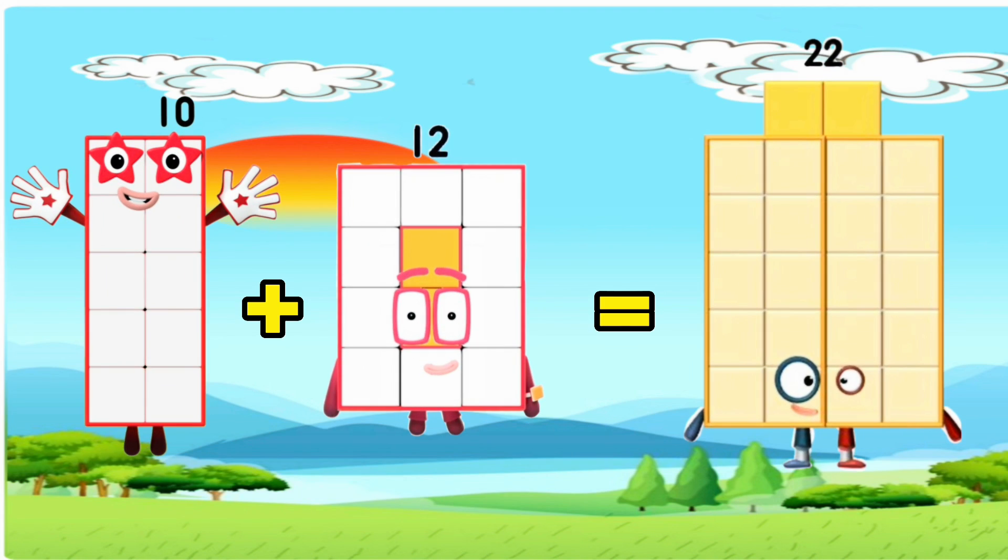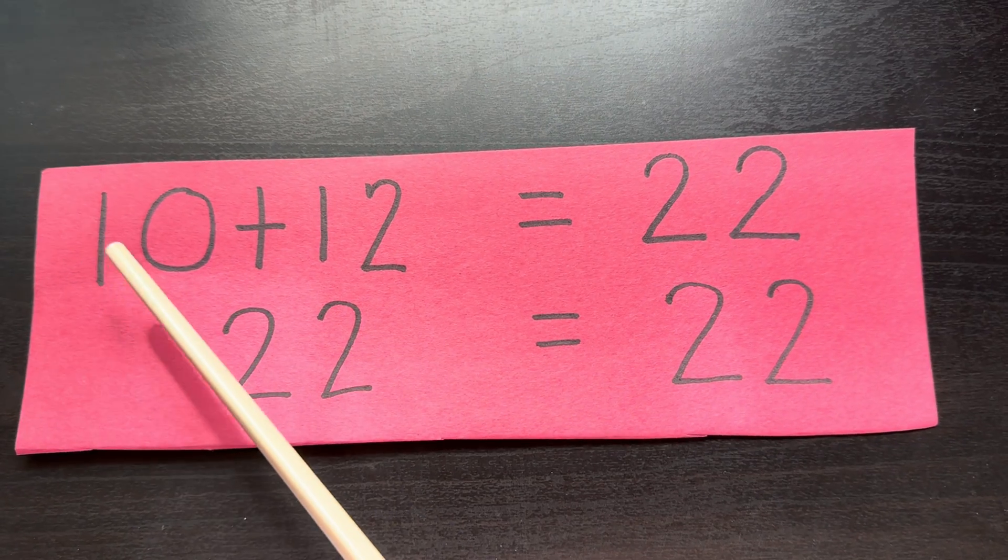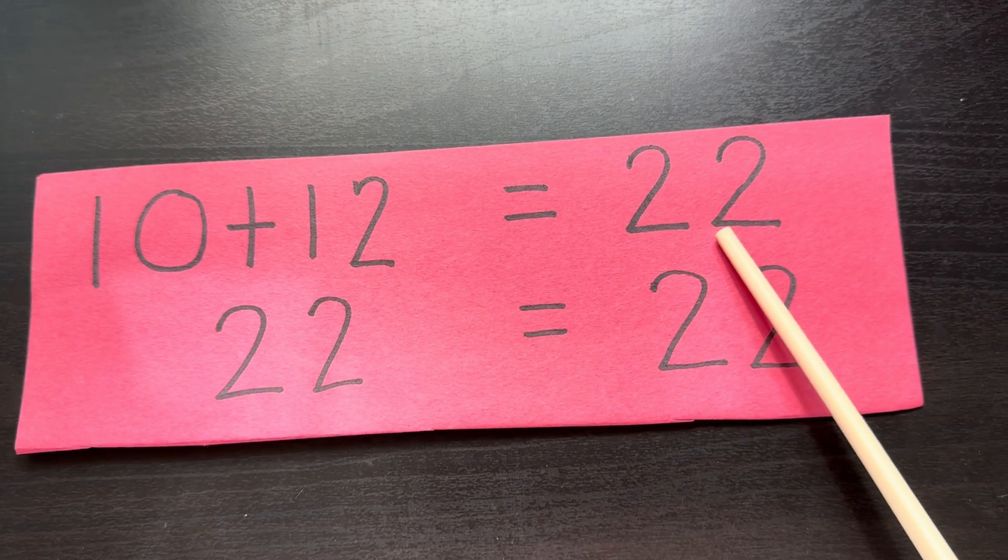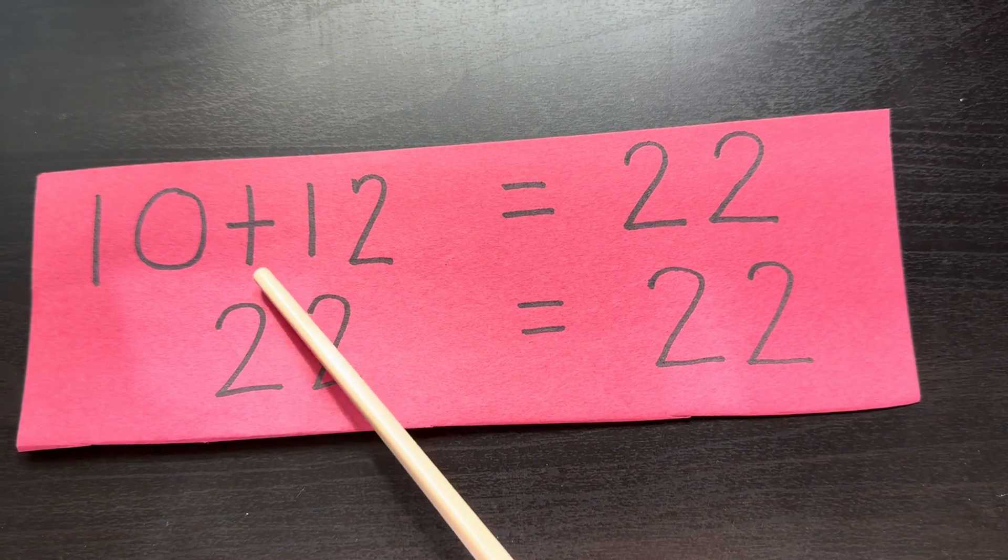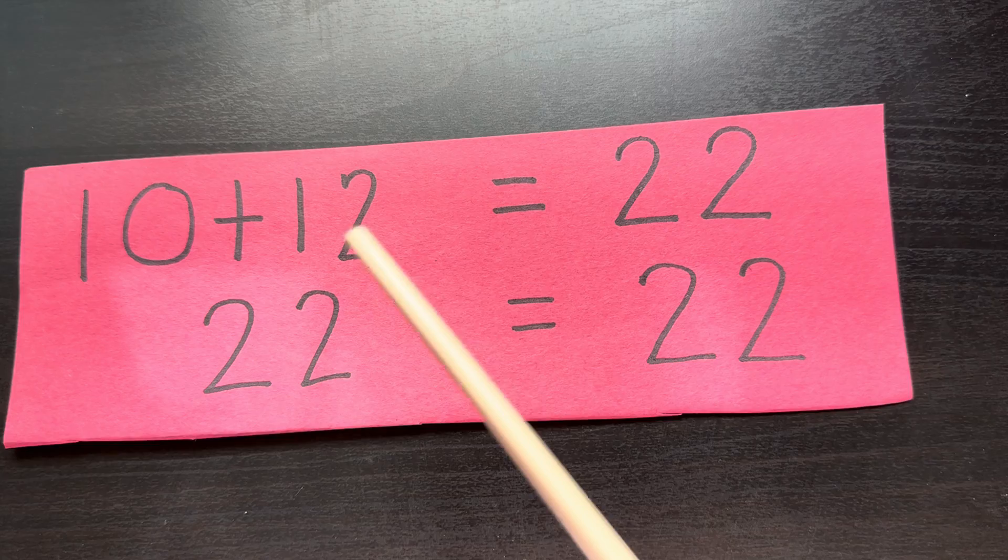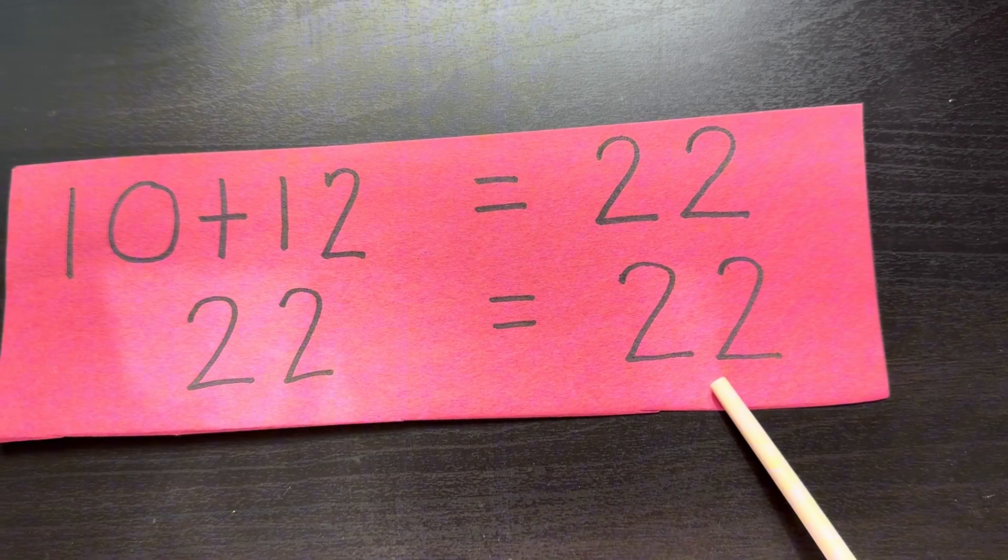Next, 10 plus 12 is equals to 22. Therefore, 22 is equals to 22.